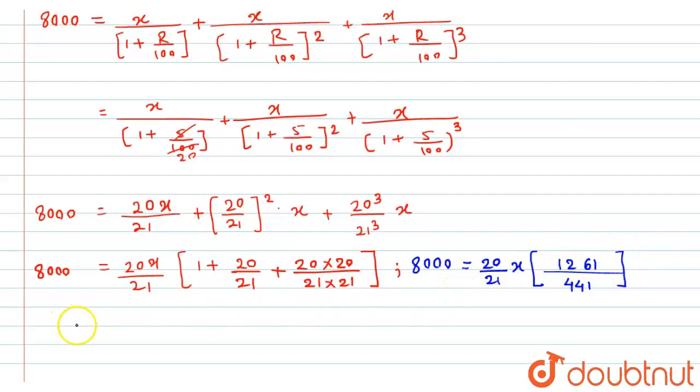Ab agar hume find out kya karna hai installment, aur installment hum ne kya consider kiya hai x. So, yahan se x ki value kya ho jayegi? X will become equal to 8000, multiply by 21, multiply by 441 divided by 20 into 1261. So, after on solving it, we get it to be as 2937.67 rupees.